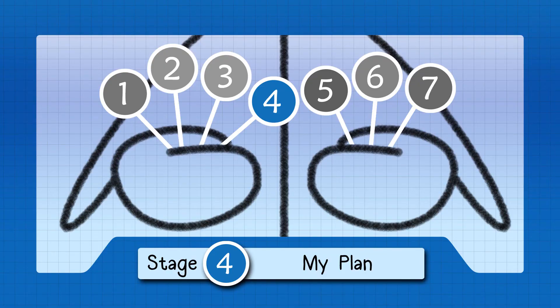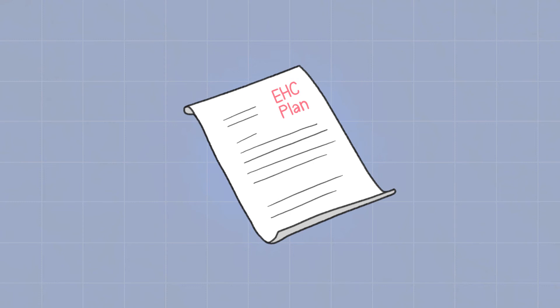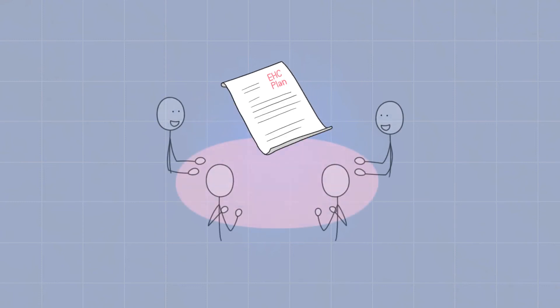Stage four, my plan. Stage four introduces the EHC plan. This document is produced by a team with the young person at the centre. The family and professionals will co-produce the plan. The content of the plan will be discussed at a multi-agency meeting.